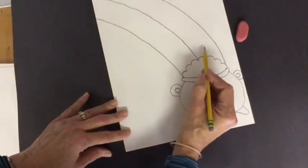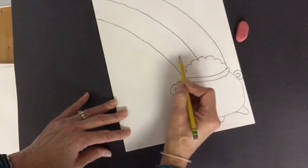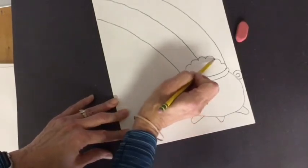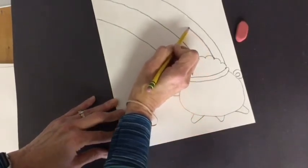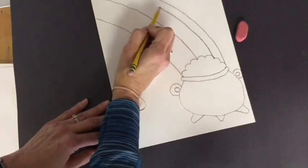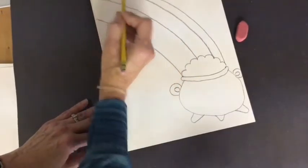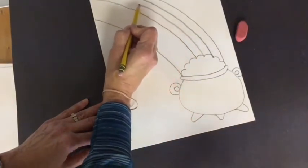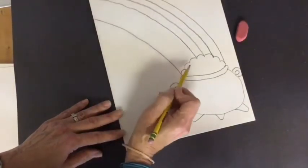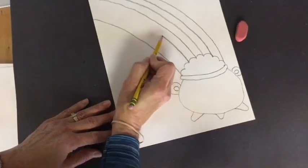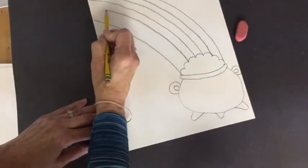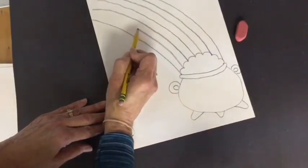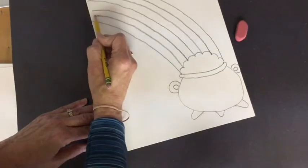Then in this space I'm going to put two more lines and in this space I'm going to put two more lines to finish my rainbow. Watch how slow I go. One curved line. Two curved lines. One curved line. Two curved lines. There we go.